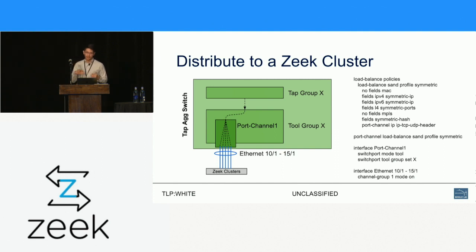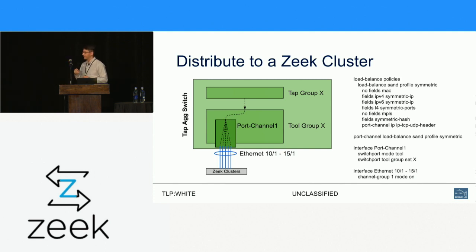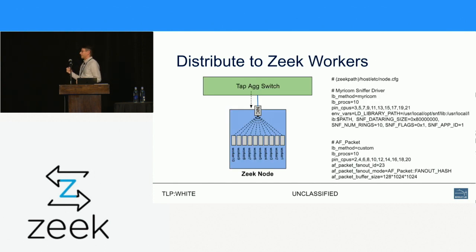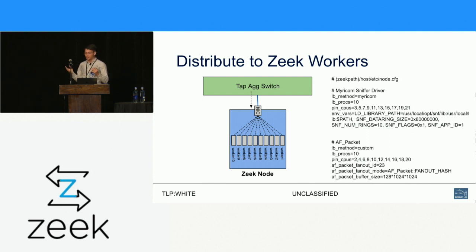You can do load balancing across a port channel to a Zeek cluster. A normal port channel in networking can just spray packets across interfaces — packet one down interface one, packet two down interface two. The problem is different Zeek nodes on the far end are no longer seeing all packets in a connection, so they'll have trouble reassembling it. What you can do is configure a policy or profile specifying the criteria — like a five-tuple — for the switch to decide which interface to send all packets for a given connection.